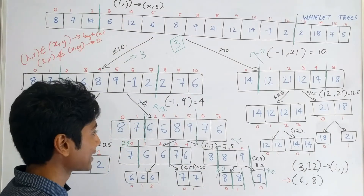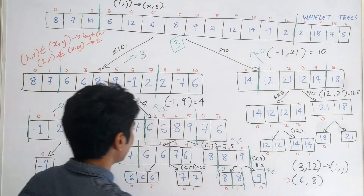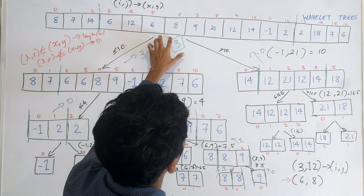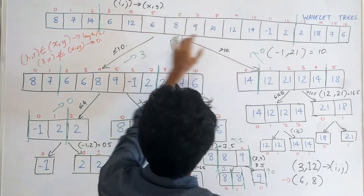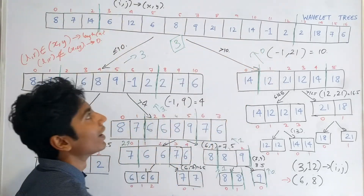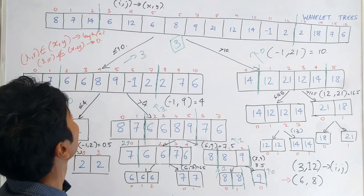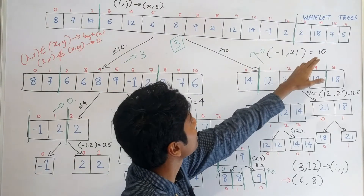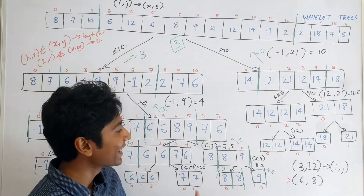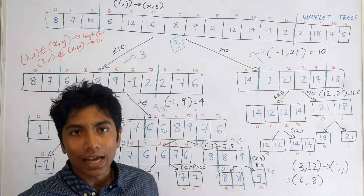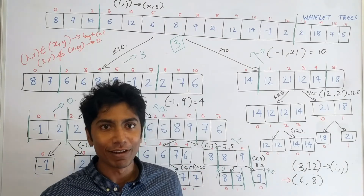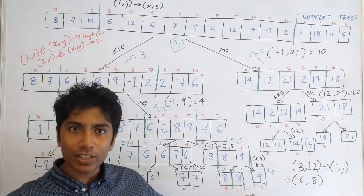Let's verify: in index range 3 to 12, looking for values 6 to 8, we can see 6, 6, and 8 — that's 3 elements. The 7s and 6s are there too so yes, it must be right, it's 3. And this is how you find the number of elements within a range of values and a range of indexes in a wavelet tree.